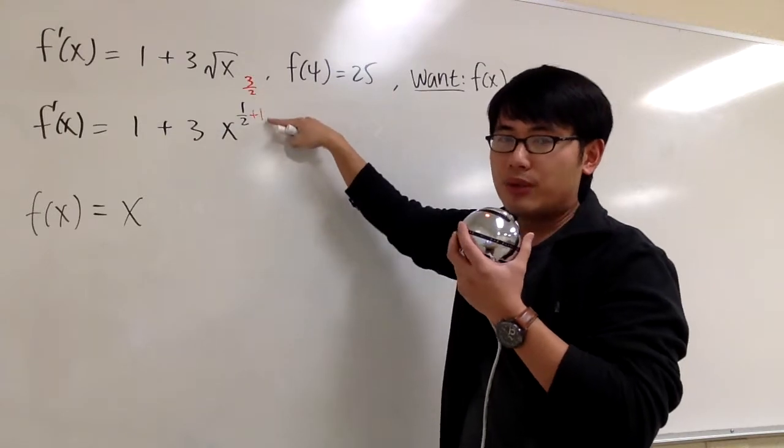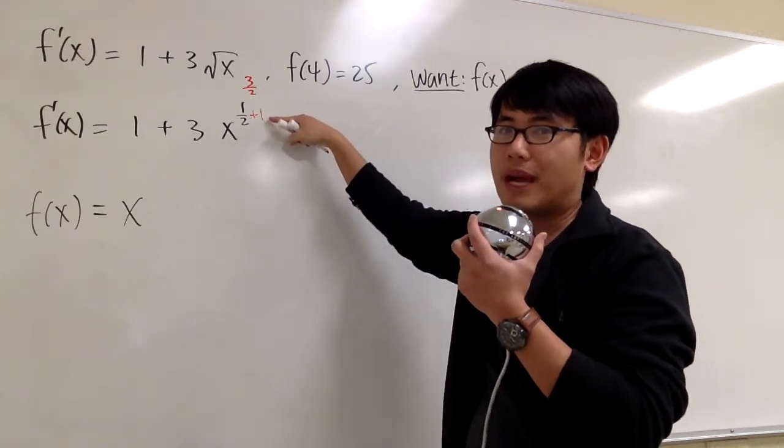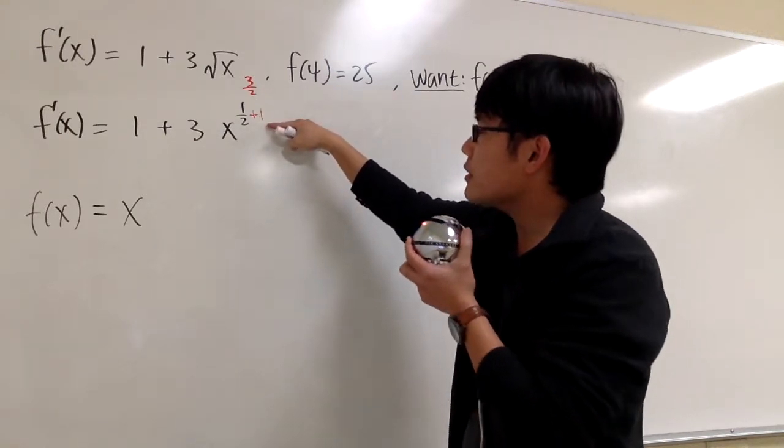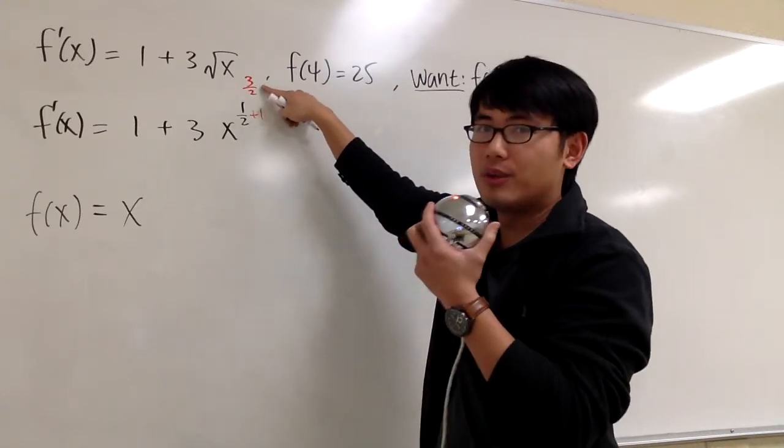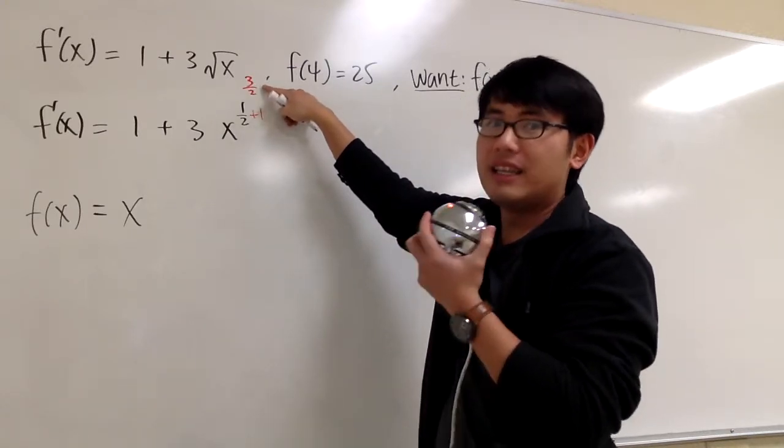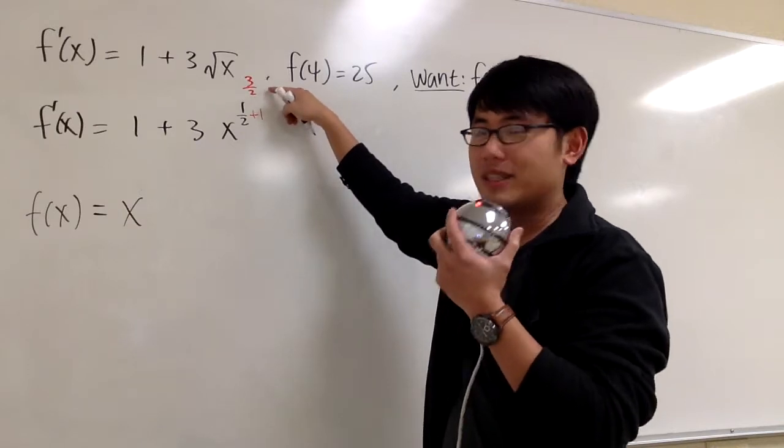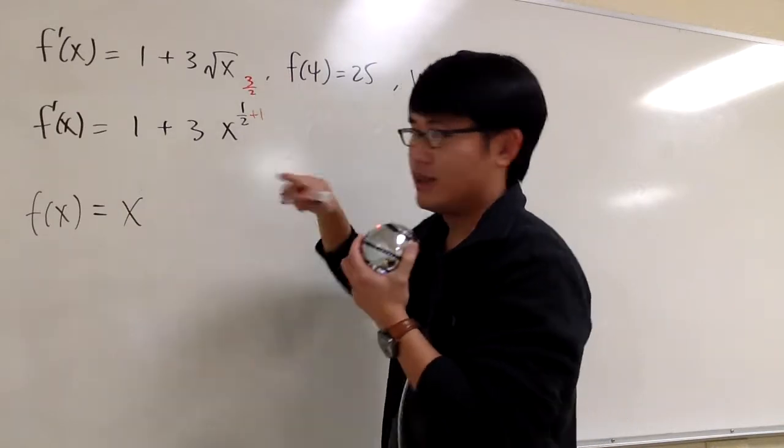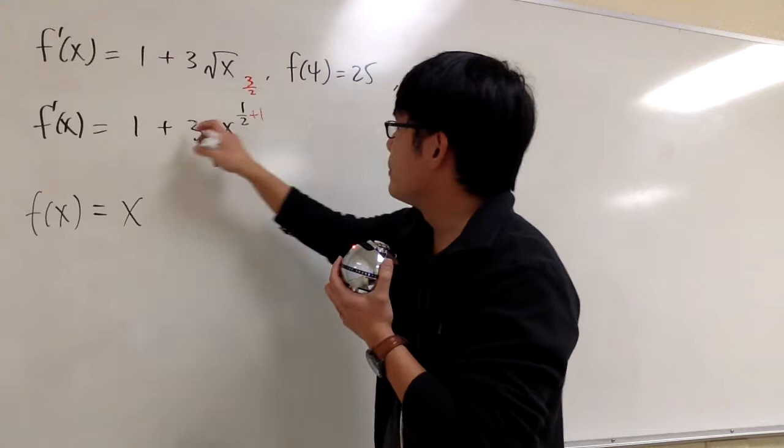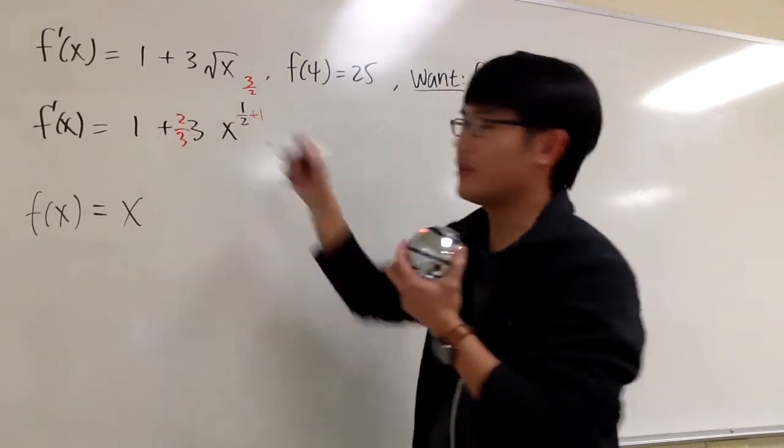That's the first step. You add 1 to the exponent when you want to do the derivative backwards for the power rule. And then you want to divide by the new exponent. Dividing by 3/2 is the same as multiplying by 2/3. You flip that.